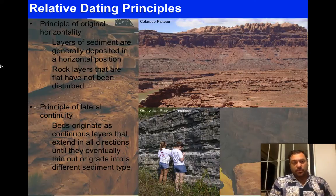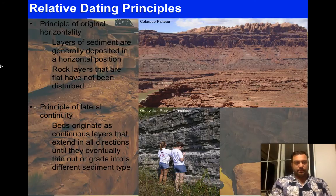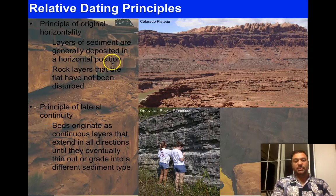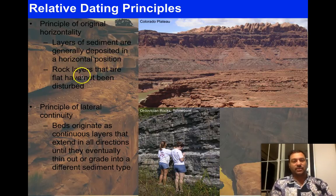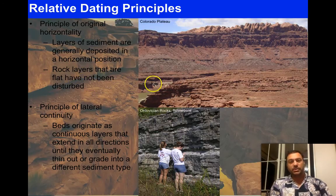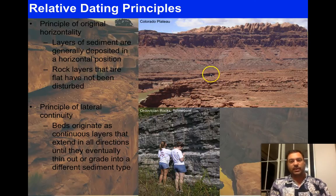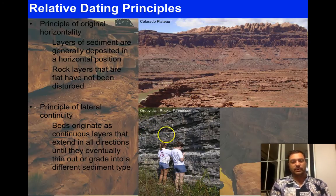The principle of original horizontality states that layers of sediment are generally deposited in a horizontal position — flat. Rock layers that are flat have not been disturbed. Here on the Colorado Plateau we see rock layers nice and flat everywhere. Here in these Ordovician rocks we see the same thing: nice flat layers, not deformed, not disturbed.